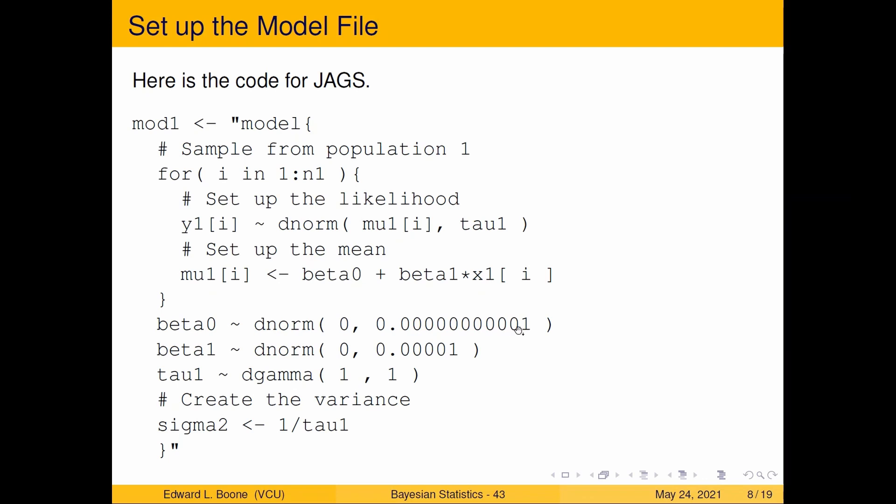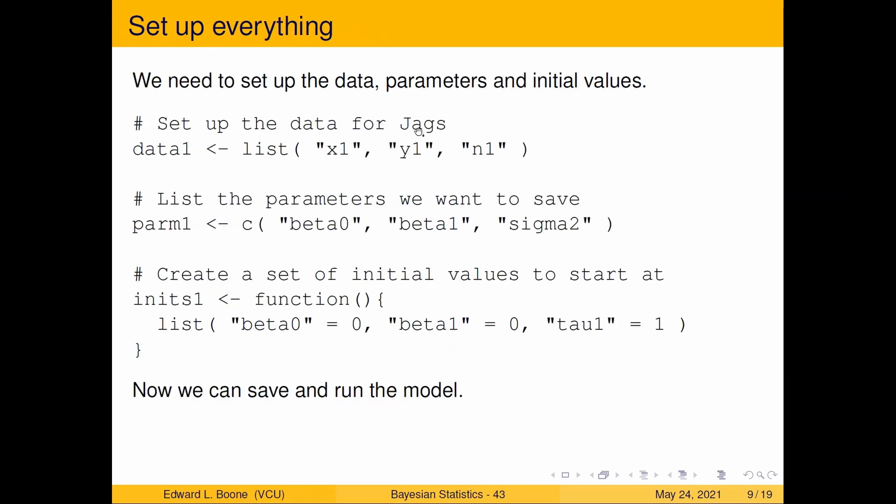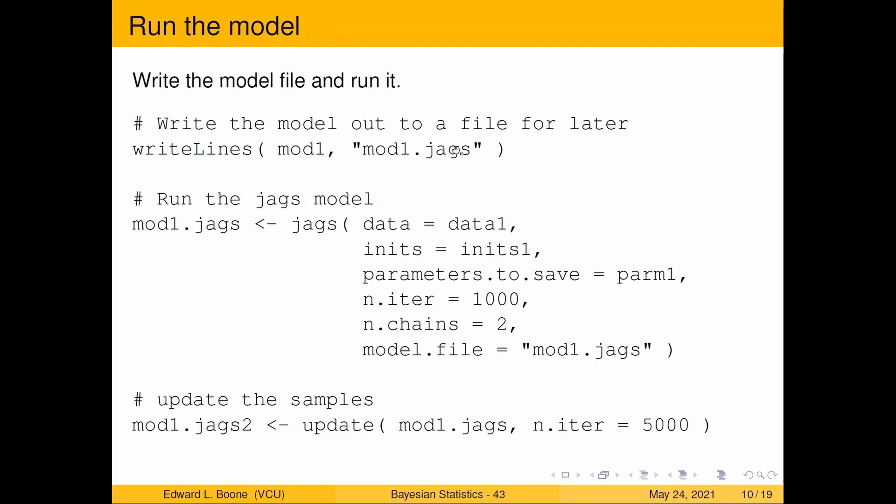Same setup as last time, we changed nothing here. I've got a new model because I changed the prior distribution, so that means the model has changed. Same parameters, same initial values. Now we can save the file and run it and then update it. I did all this, everything works out fine.